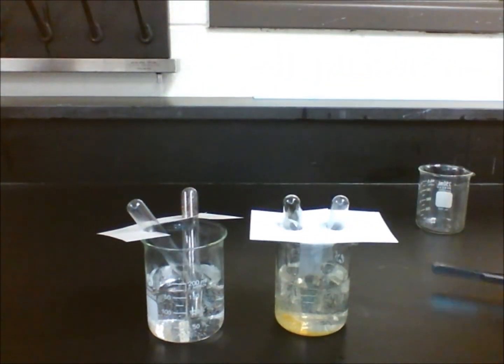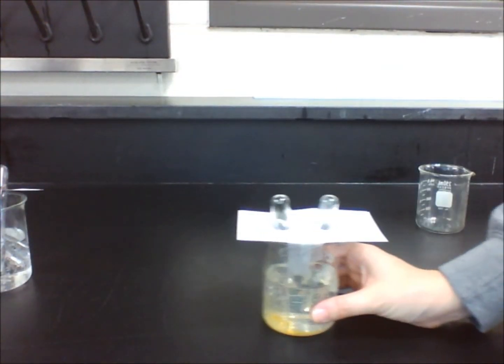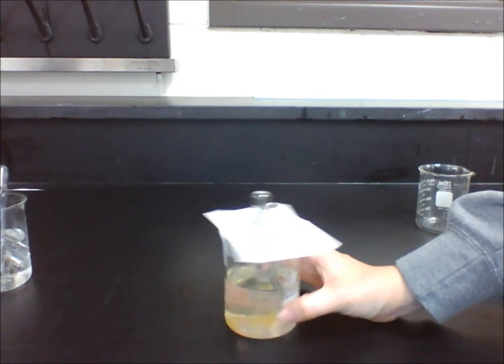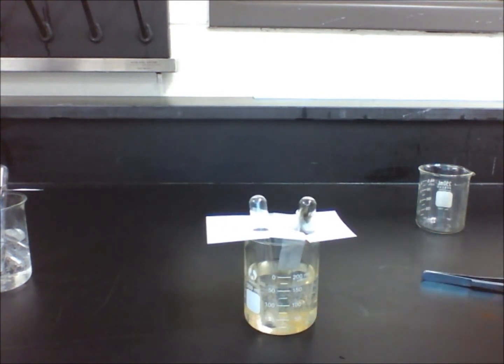Steel wool is made of iron and carbon, but for the purpose of this experiment, we are going to treat it as if it's made of pure iron. It has been dipped in vinegar to remove any dirt and protective coating for the experiment.